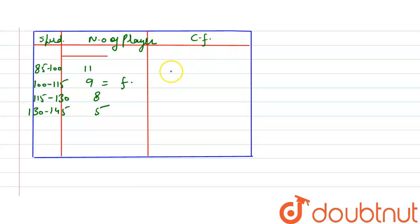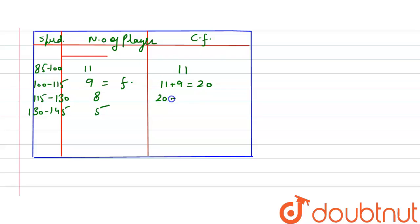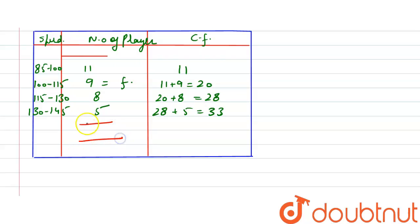Now for cumulative frequency: the first interval 85–100 has frequency 11, so cumulative frequency is 11. The second interval gives 11 plus 9, which equals 20. The third gives 20 plus 8, which equals 28. The fourth gives 28 plus 5, which equals 33. The total summation of frequencies is 33.